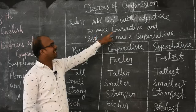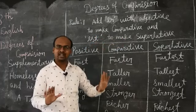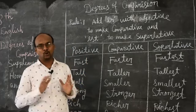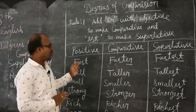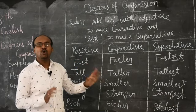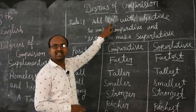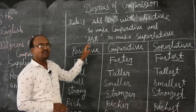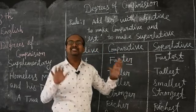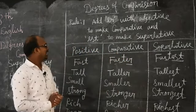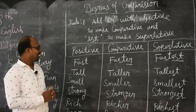The first rule says: add ER with an adjective to make comparative, and EST to make superlative. This is the basic rule. So when we want to change an adjective, or positive, into comparative, we have to add ER. For superlative, we need to add EST. That is the basic rule.